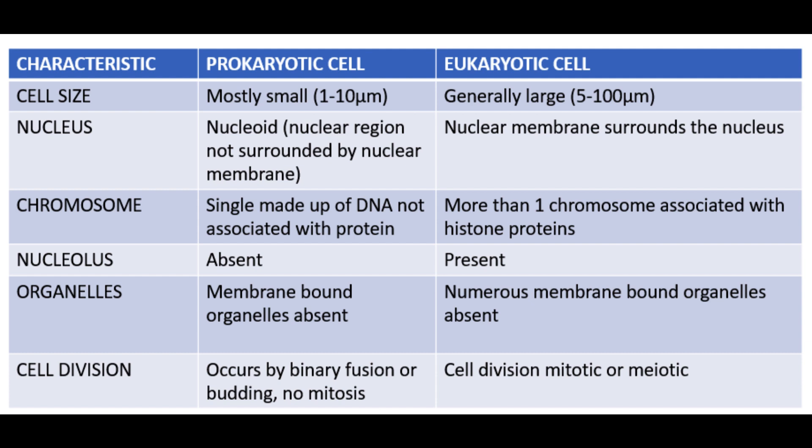The nucleolus is absent in prokaryotic cells while it is present in eukaryotic cells. Prokaryotic cells do not have well-defined cell organelles, while eukaryotic cells have multiple membrane-bound organelles. Cell division in prokaryotic cell occurs through binary fission or budding and there is no mitosis, whereas in eukaryotic cells the cell division happens with mitosis or meiosis.